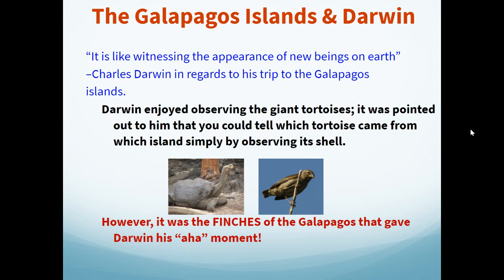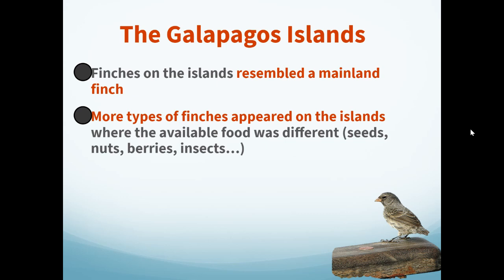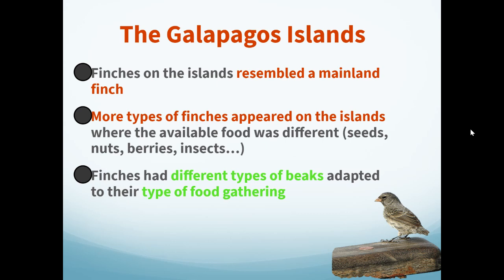It was also the mockingbirds and finches found in the Galapagos Islands that continued to further Darwin's curiosity. Each of the finches on the islands resembled a mainland finch, and more types of finches appeared on islands where food was available — things like seeds, nuts, berries, and insects. Over time, those finches developed different types of beaks adapted to the type of food available on each island.